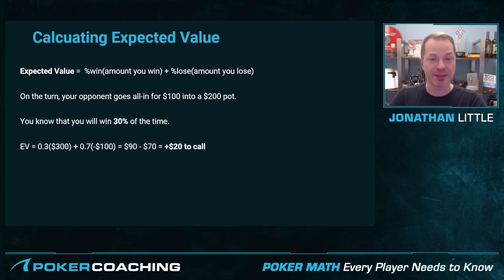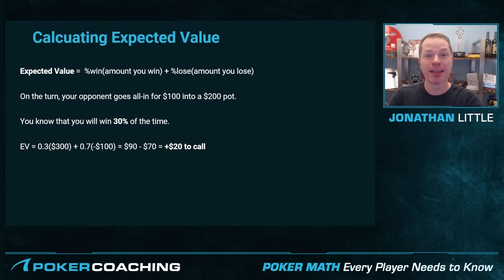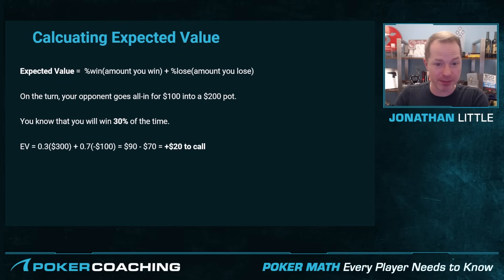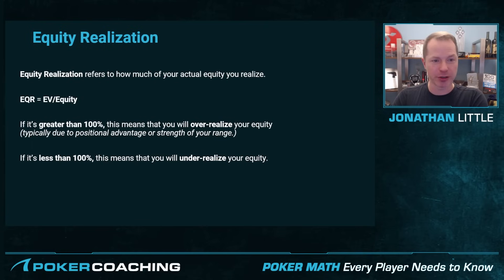You can actually lose quite often and still make a lot of money. For example, say you know you're going to lose 99 out of 100 times and you have to risk $1, but when you win, you win a million dollars. Even though you're going to lose 99 out of 100, if you're putting in one to try to win a million, that's obviously a very, very good deal. You don't find spots that profitable in poker, but situations occur all the time where you're going to win 30% of the time, and because the pot is so large, you can make a profitable call even though you're going to lose more often than not.